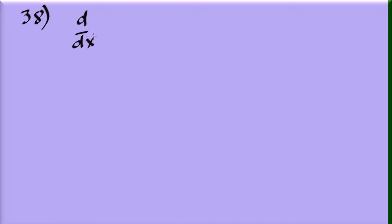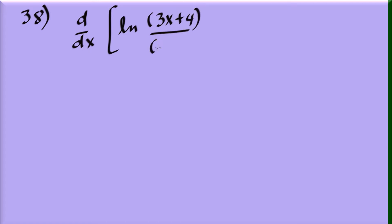Problem 38: a different shape — the natural log of a quotient, specifically the natural log of (3x plus 4) over (5x minus 2). Recall that the derivative of natural log of u equals u prime over u.